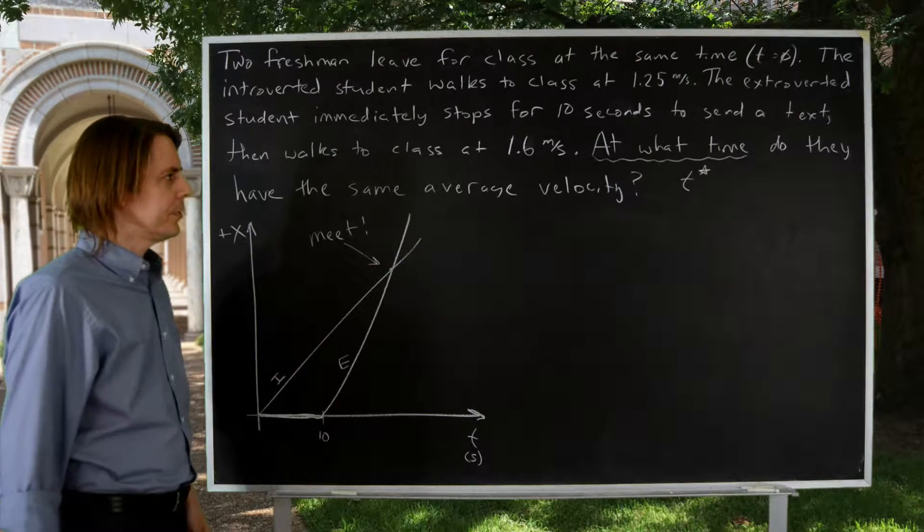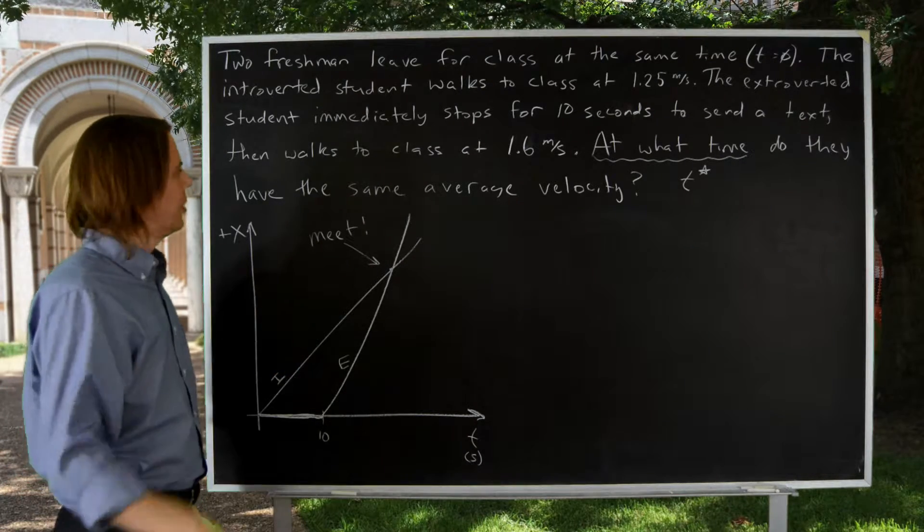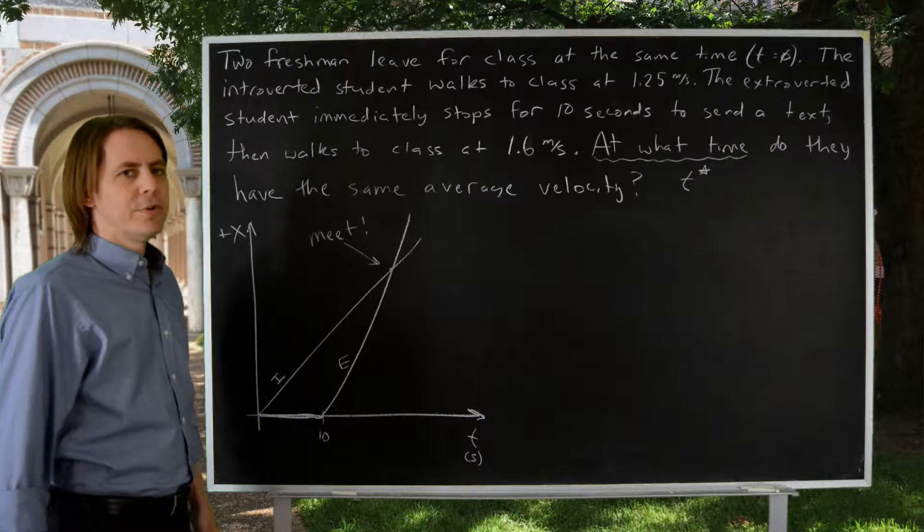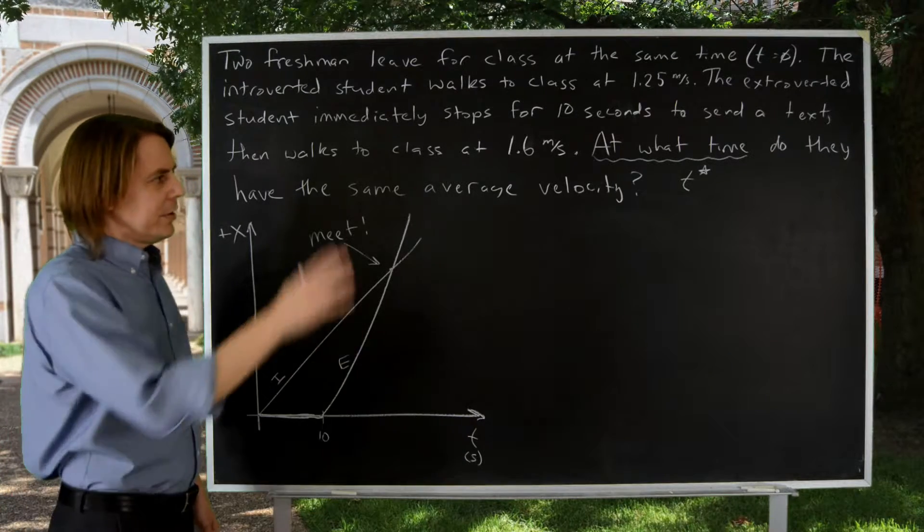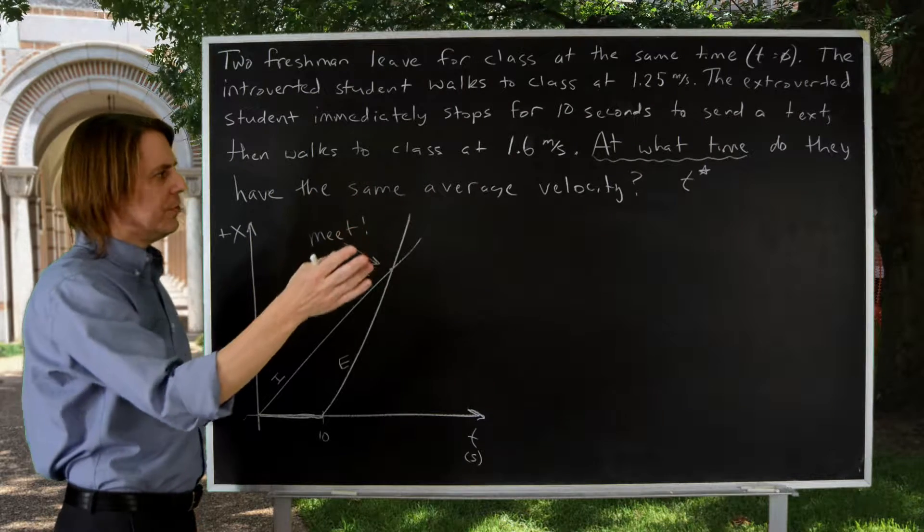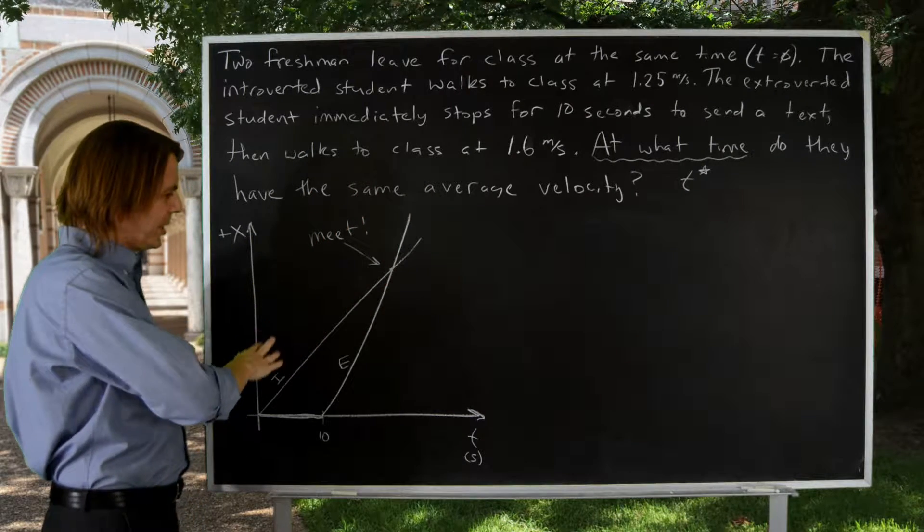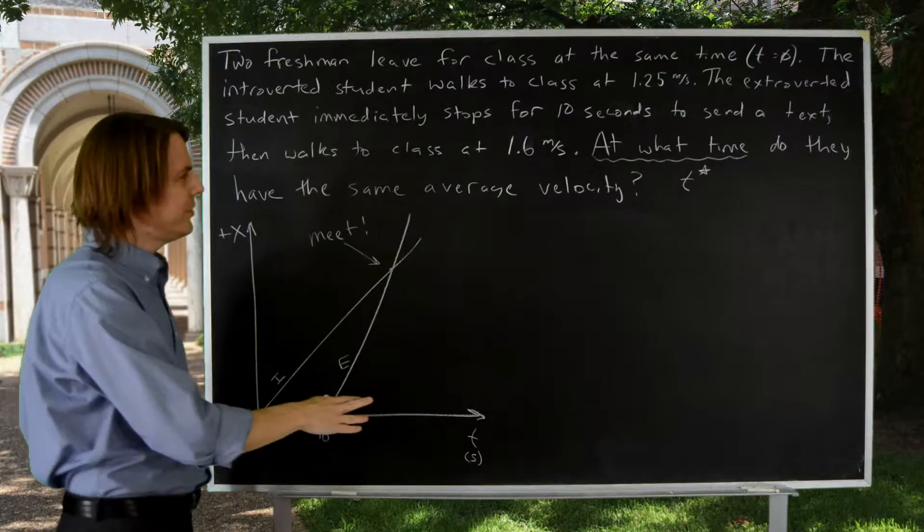So I usually immediately say, I'm looking for t star. So at what time, t star, do they have the same average velocity? Well, we could just write the average velocity of each one and solve it. It might help to get a little bit of insight by coming back to the plot, though, because what is average velocity?